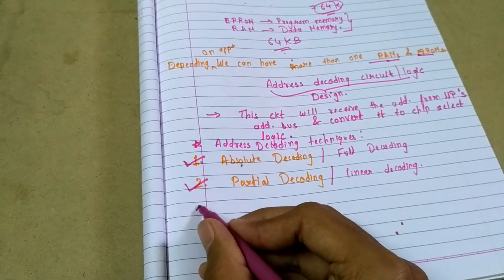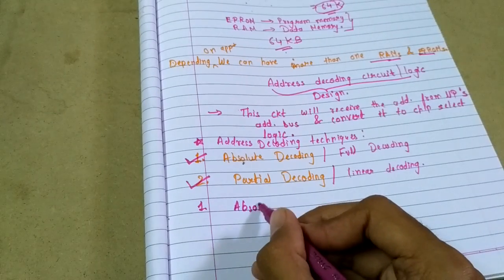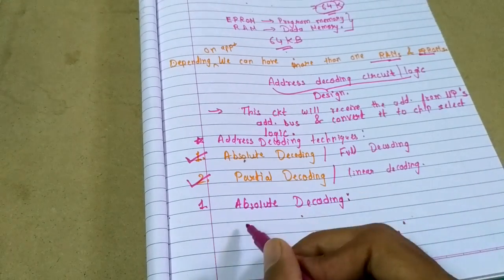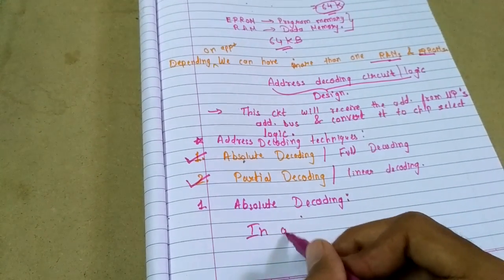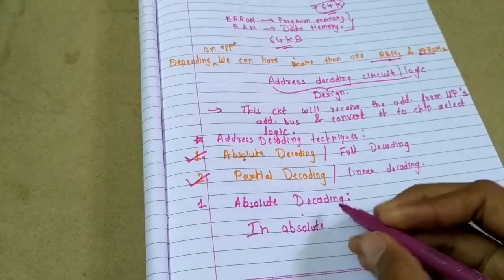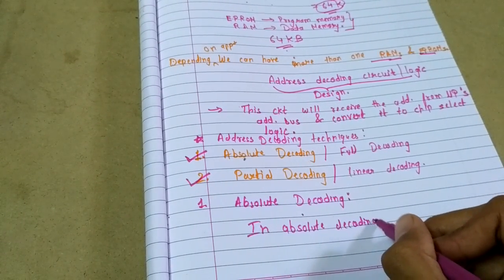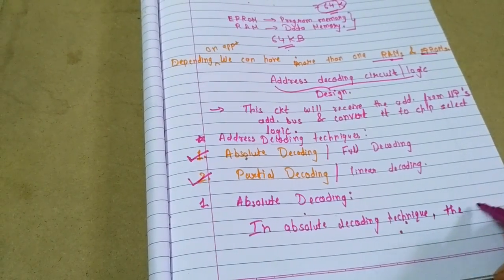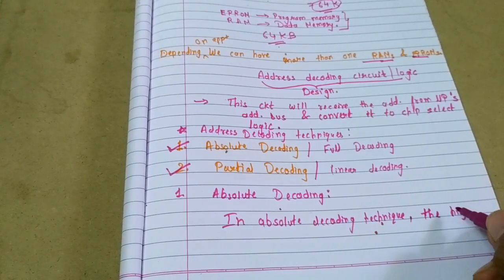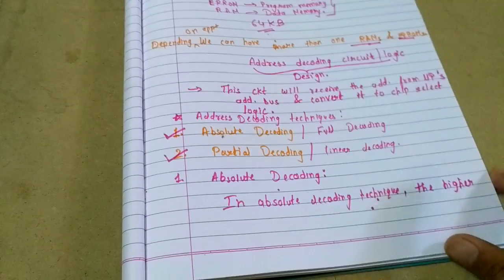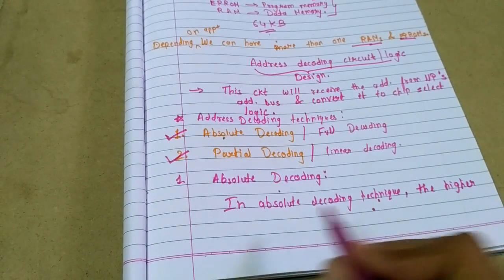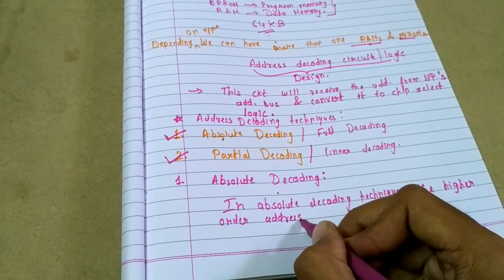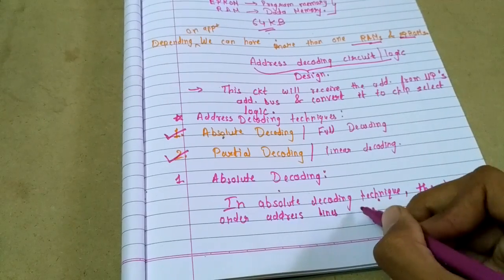Let's discuss the first one, which is absolute decoding. In absolute decoding technique, the higher order address lines are decoded.